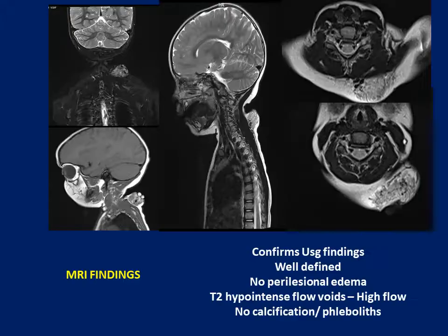An MRI neck with contrast was done. Similar findings to ultrasound were observed — the lesion is well-defined with no perlesional edema. There were T2 hyperintense flow voids, and a large blood vessel was seen on the medial aspect of the lesion. On T1 and T2, the mass lesion was predominantly hyperintense with few isointense areas. On coronal sequences the lesion was hyperintense; there was no calcification.